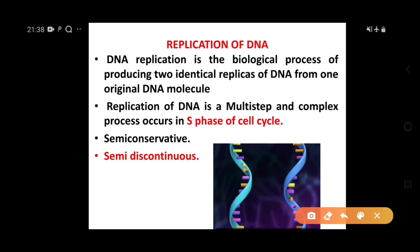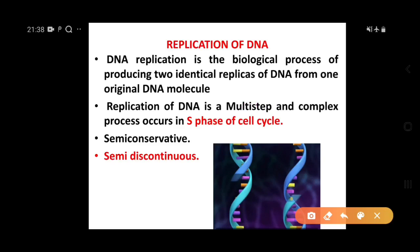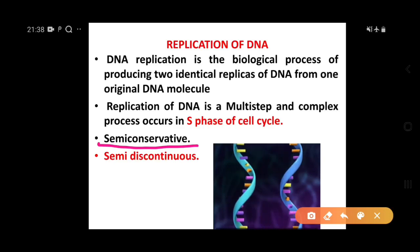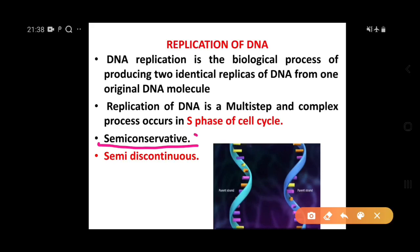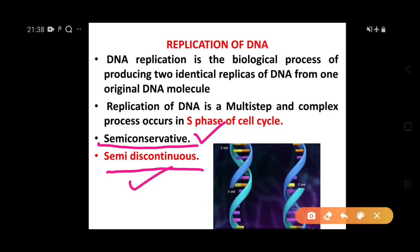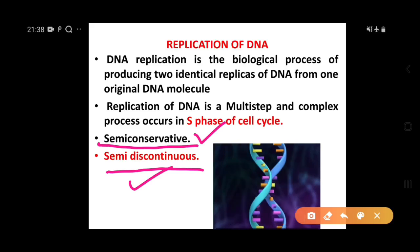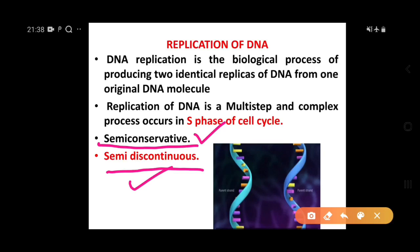Replication of DNA is a multi-step and complex process which occurs in S phase of the cell cycle. In class 11th, we studied mitosis and in interphase there is G1, S, and G2 phase — replication occurs in S phase of interphase. It is semi-conservative, as shown by the Meselson and Stahl experiment. It is also semi-discontinuous because one strand is synthesized continuously and the other is synthesized discontinuously.